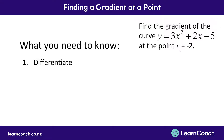Here we have another equation, and we have a point at x equals negative 2, and we're asked to find the gradient. Starting with y equals 3x squared plus 2x minus 5, our first step is always to differentiate, because we're moving from a function to a gradient. Differentiating gives us dy/dx equals 6x plus 2, because 3 times 2 is 6.